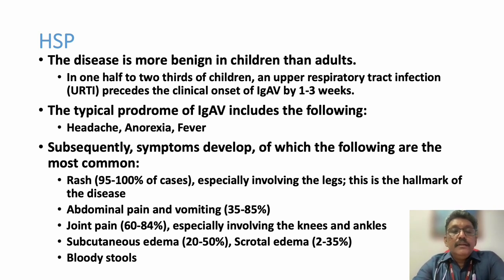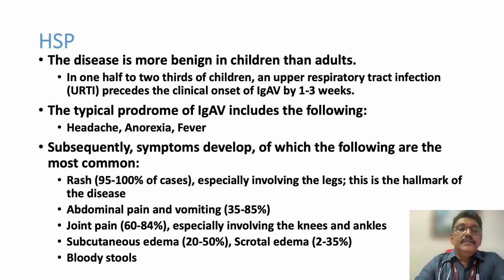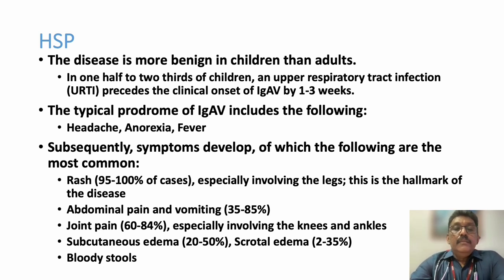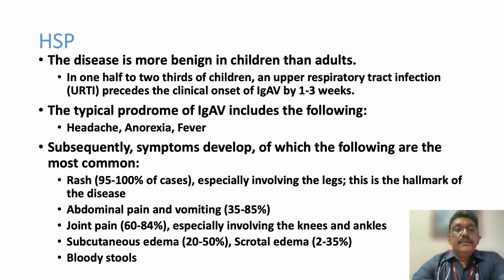The disease is very benign in children - it is mostly seen in children, and in them the disease is benign. However, when it occurs in adults, it can produce internal organ complications. Most of these children have a trigger: an upper respiratory tract infection one to two weeks prior to the skin lesions.